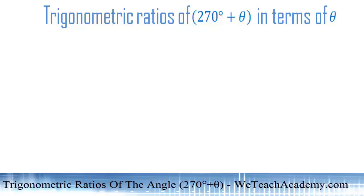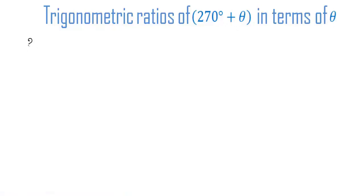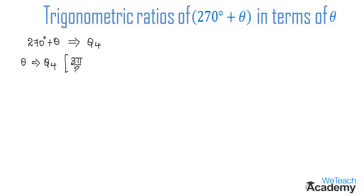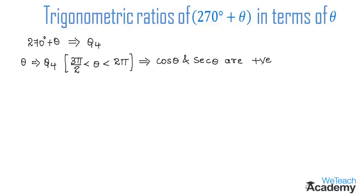Welcome to vteachacademy.com. Today's topic is trigonometric ratios of 270 degrees plus theta in terms of theta. We know that 270 degrees plus theta lies in the fourth quadrant. In the fourth quadrant, where theta ranges from 270 degrees to 360 degrees, only cos theta and secant theta are positive; the rest of the ratios are negative.